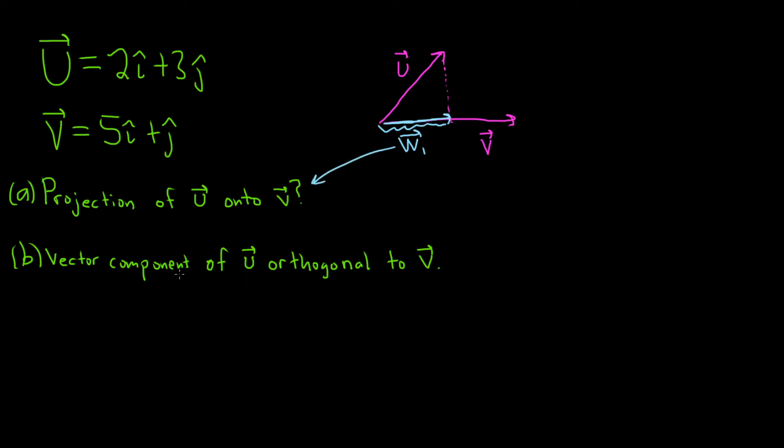And then part b wants the vector component of u orthogonal to v. So if you take a vector and you go all the way to the top to where u ends, we'll call that w2. That's part b. That's called the vector component of u orthogonal to v. It creates a 90 degree angle.